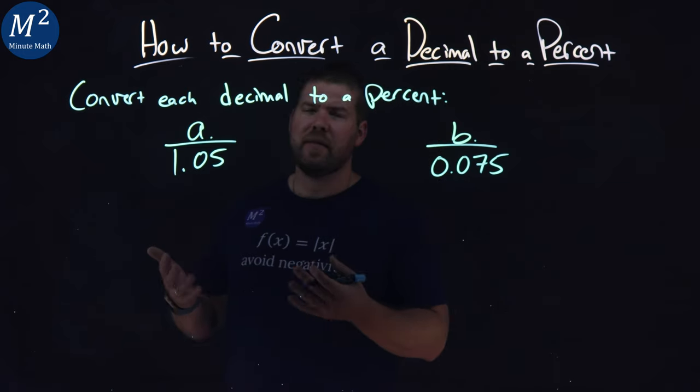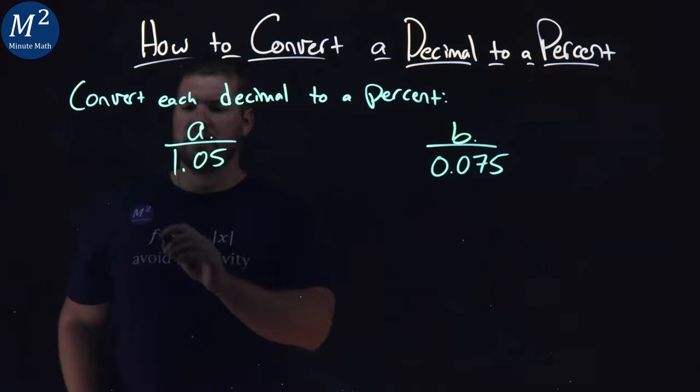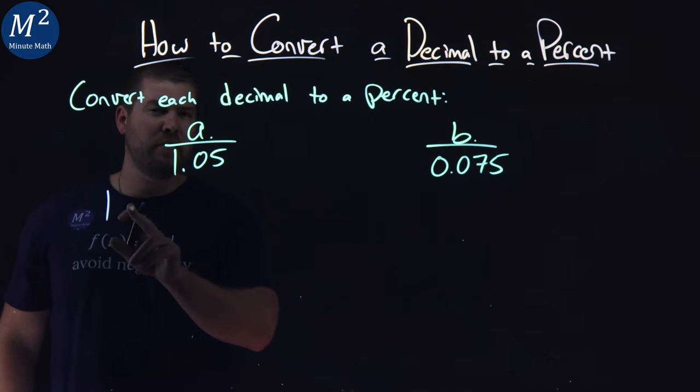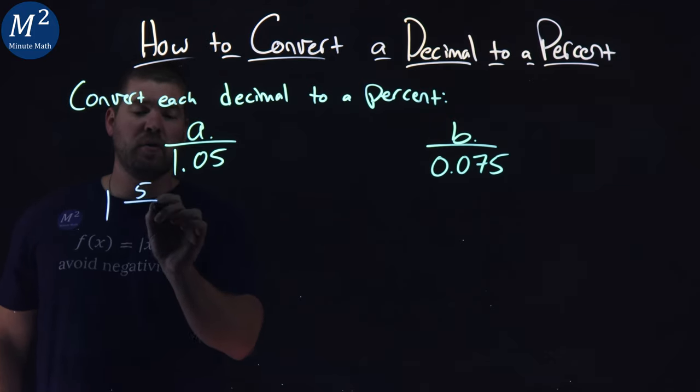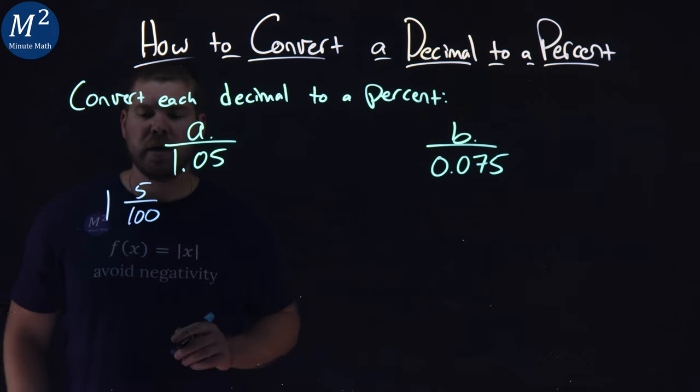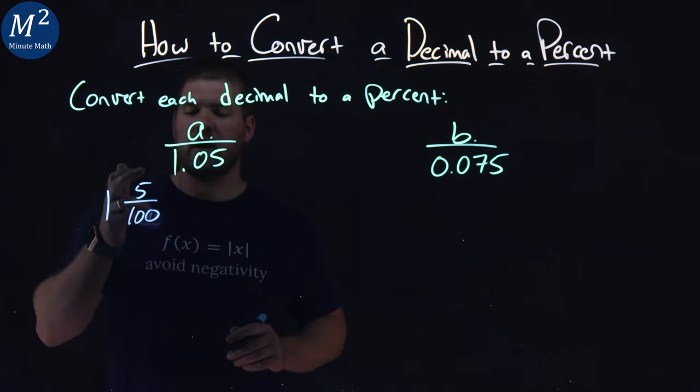We first want to write this as a fraction. The 1 out front, we'll write as a proper fraction. And 0.05 is the same thing as 5 over 100. So we have 1 and 5 over 100.